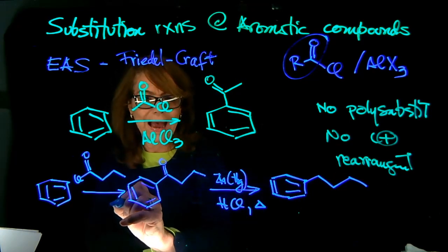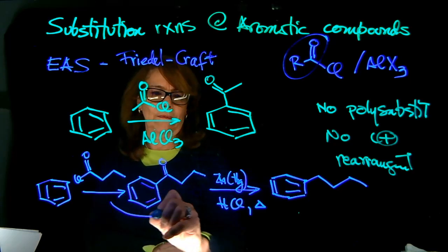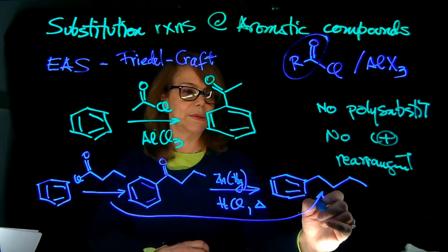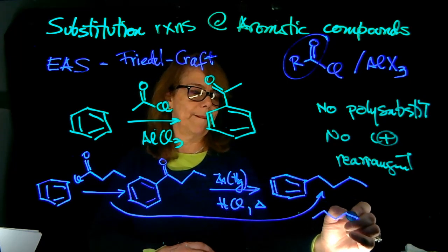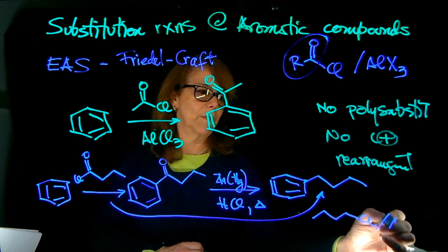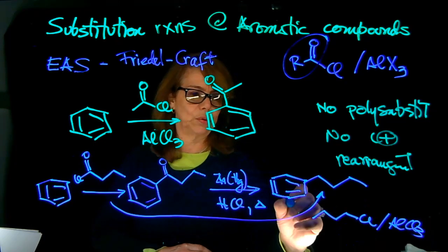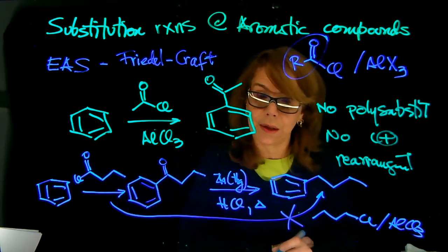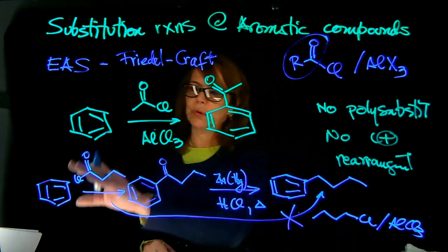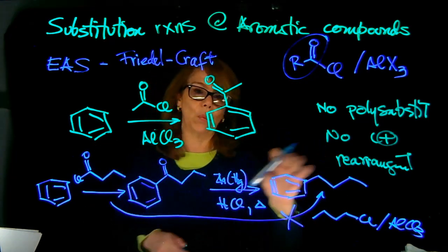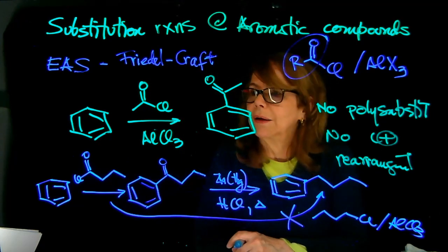So now, instead of going directly, the path, if I wanted to do this, that will not give me the desired product, because you will have rearrangement. So instead, we use acylation, and then we reduce, Clemmensen reduction.